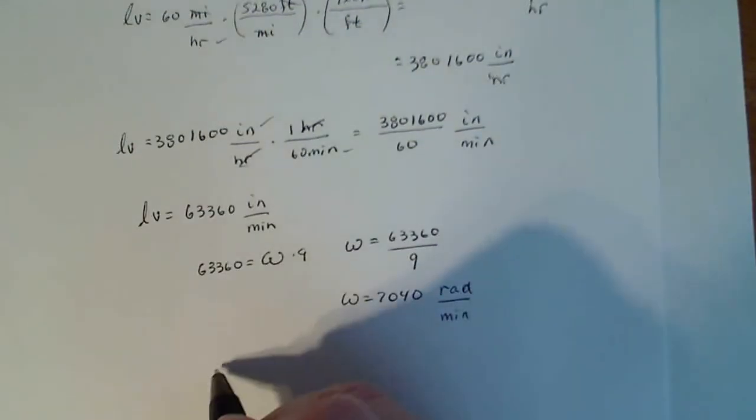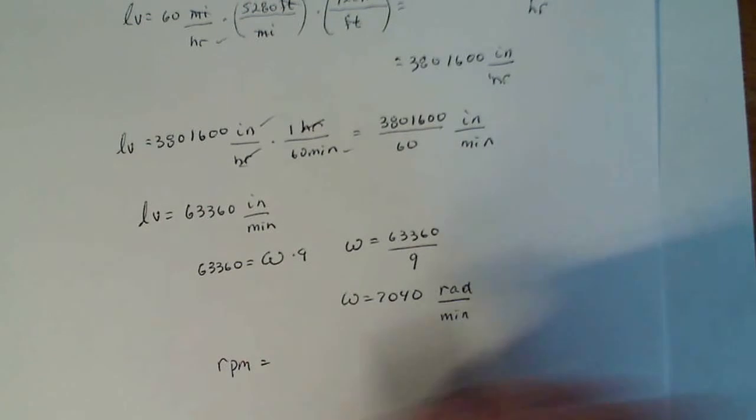But I want revolutions, my RPMs. That's going to equal 7,040 radians per minute times a revolution around a circle is going to be 2π radians.